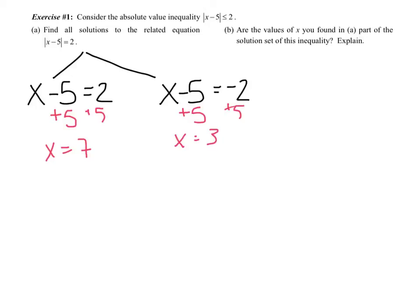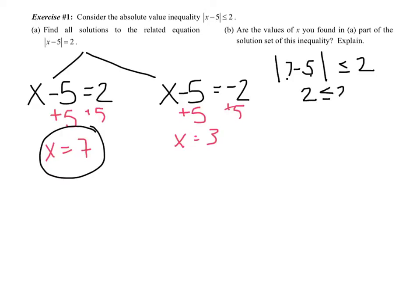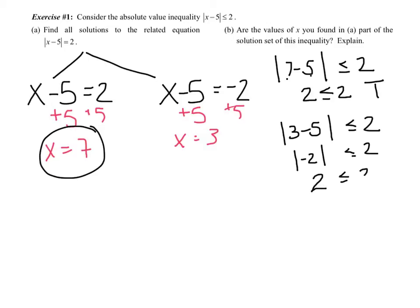Part B says: are the values of x you found in part A in the solution set to this inequality? Let's plug them in. For x equals seven: the absolute value of seven minus five is less than or equal to two — that's two is less than or equal to two, which is true. For x equals three: the absolute value of three minus five is the absolute value of negative two, which is positive two, so that's also true.